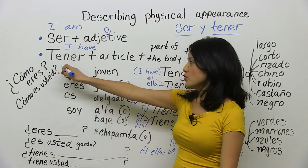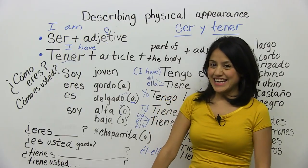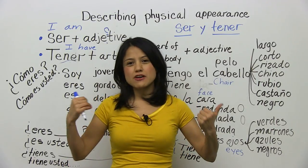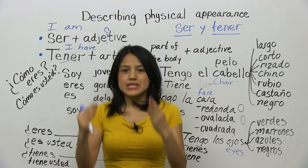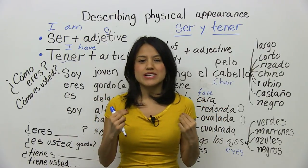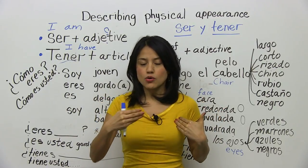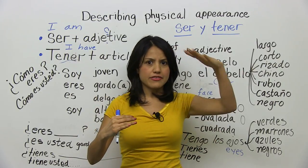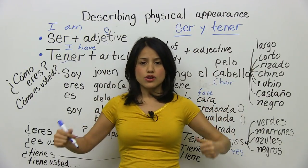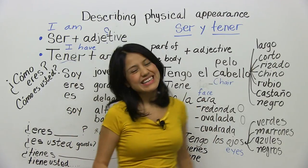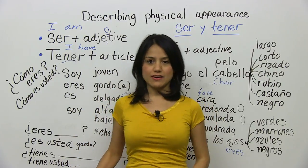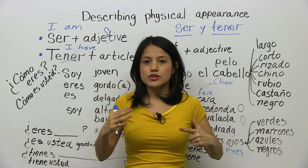Now let's move on to the second verb: tener. Tener is used to describe the parts of your body. With ser we describe ourselves — our qualities — but with tener the object is the part of the body you're describing. My eyes are black, my face is round, my nose is big — for that you're going to use tener. The object we're describing is not you, but the part of the body.